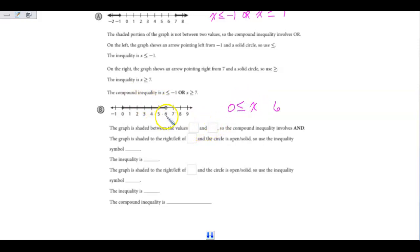When I take a look at this one, I have my 6, and it's open, so there is no line underneath. And it's every point less than 6, so X can also be less than 6.